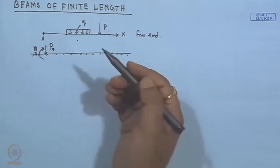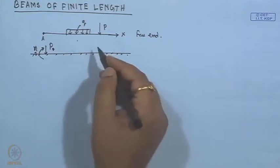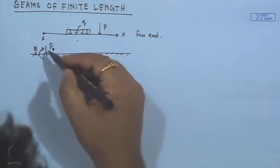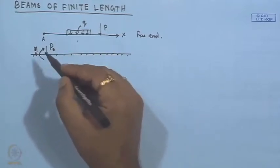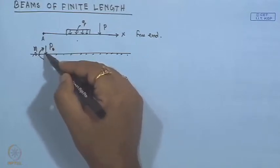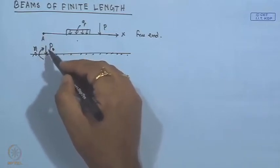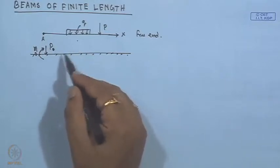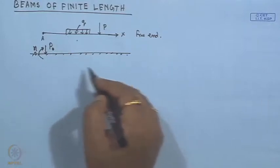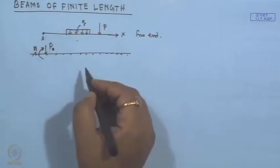We make this point as an infinite beam and then apply this moment M₀ and load P₀ such that it produces moment minus M_A and minus Q_A shear force. The net moment and net shear force of this infinite beam at point A is zero, such that we can make it equivalent to a semi-infinite beam and derive the expressions.